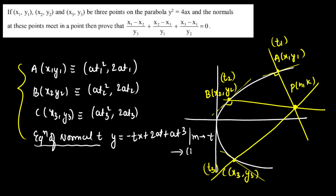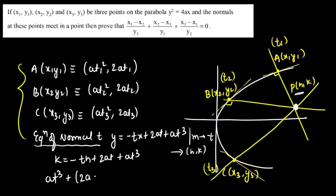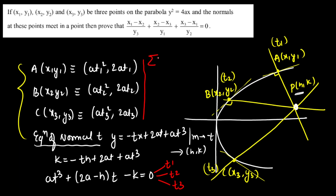Since this normal is passing through (h, k) — that common point P — I substitute (h, k): k = -th + 2at + at³. Making a cubic in t: at³ + (2a - h)t - k = 0. We are getting a cubic in t, which means there are three solutions: t1, t2, and t3. Using Vieta's formulas, the sum t1 + t2 + t3 = 0 because the coefficient of t² is zero.